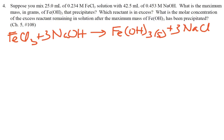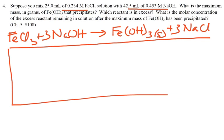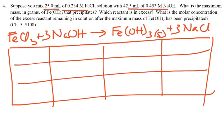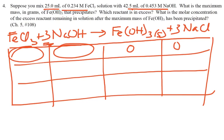We have 25 milliliters of 0.234 molar iron chloride and 42.5 milliliters of 0.453 molar sodium hydroxide. We'll need to figure out who runs out — that sounds like an ICE box problem. Set up an ICE box. Take volume times molarity to get moles of iron chloride, and volume times molarity to get moles of sodium hydroxide. Because sodium hydroxide runs out three times faster, figure out who is your limiting reactant.